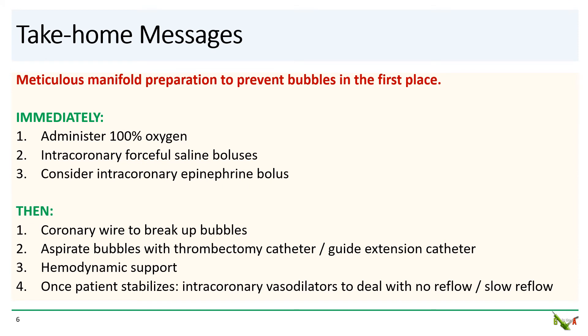So take-home messages. First, prevent bubbles. Be very meticulous about preparing your manifold so that no bubbles get injected in the first place. If you do end up with a large coronary air embolism, here is the approach that we typically take. Immediately, administer 100% oxygen and forcefully inject saline into the coronary artery to flush through the bubbles. Consider using intracoronary epinephrine. Then, get a coronary wire in there to break up the bubbles and use a thrombectomy catheter or guide extension catheter to suck the bubbles out.